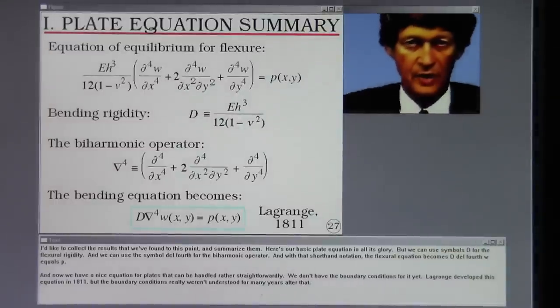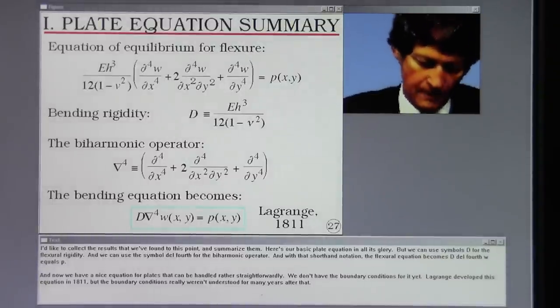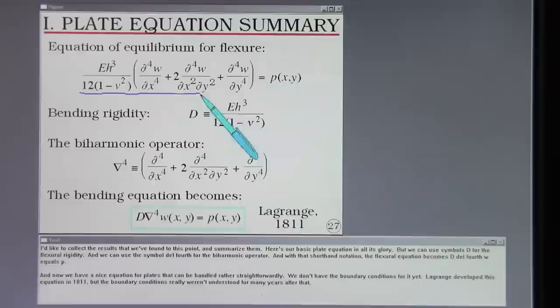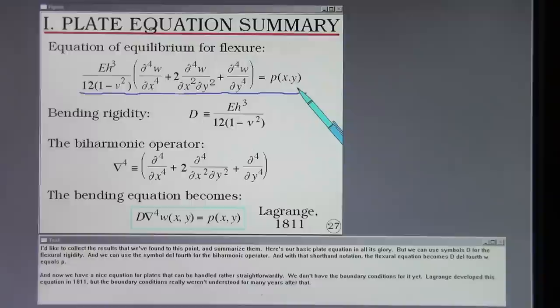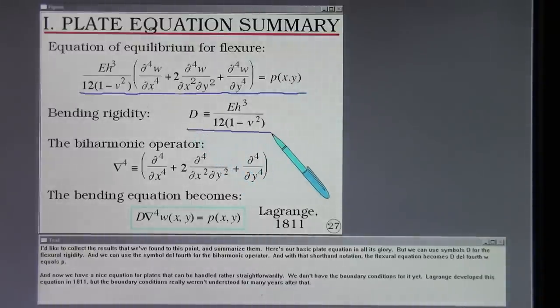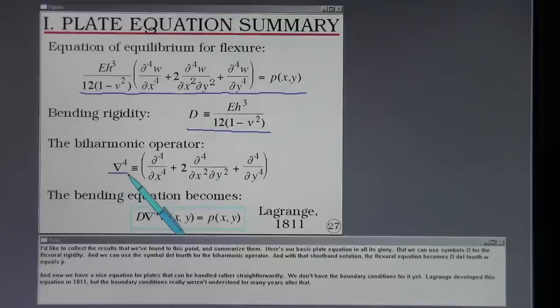I'd like to collect the results that we've found to this point and summarize them. Here's our basic plate equation in all its glory. But we can use symbols D for the flexural rigidity and we can use a symbol del 4th for the bi-harmonic operator. And with that shorthand notation, the flexural equation becomes D del 4th W equals P. And now we have a nice equation for plates that can be handled rather straightforwardly. We don't have the boundary conditions for it yet.